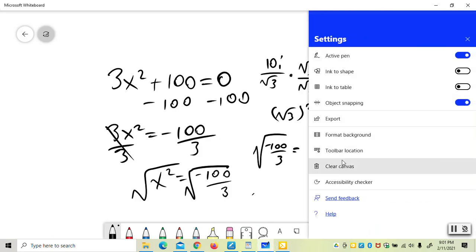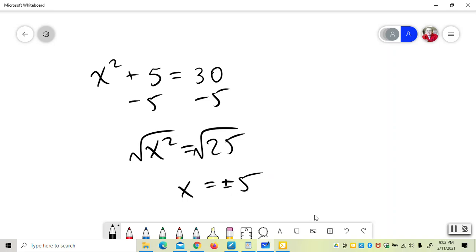Another situation could be you have something like x squared plus 6 equals 31. In that case, you would just take your numerical part over, and once more you take the root of both sides and you get x is plus or minus 5.